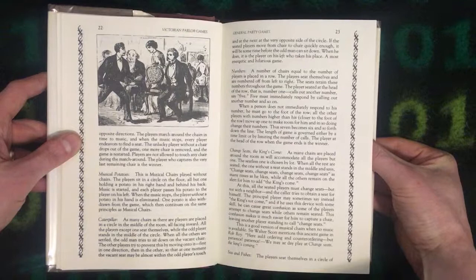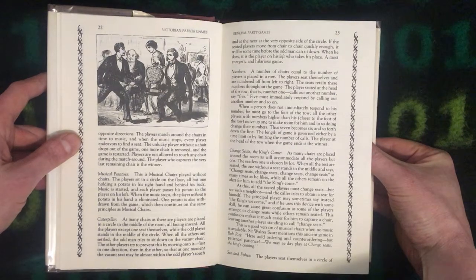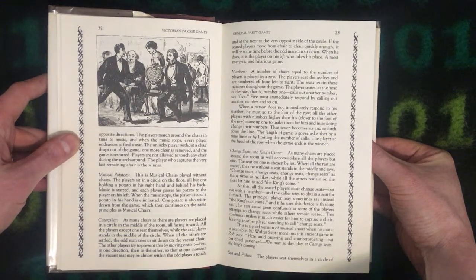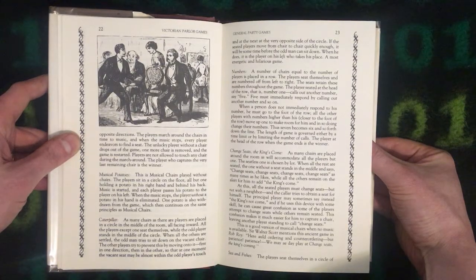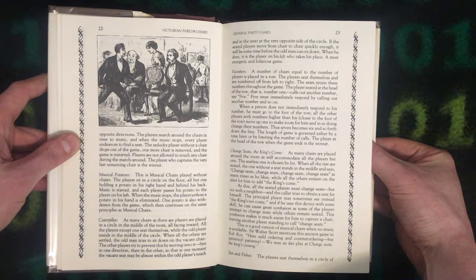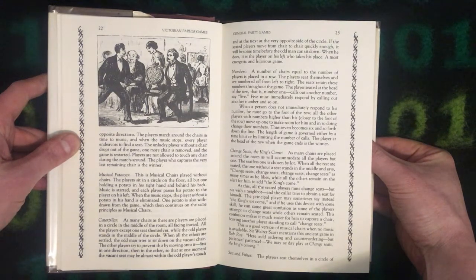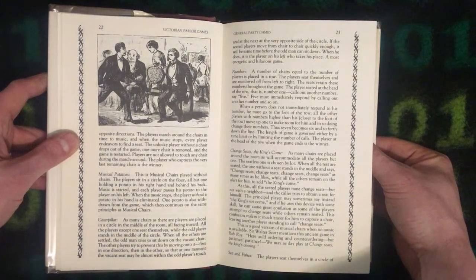This is Musical Chairs played without chairs. The players sit in a circle on the floor, all but one holding a potato in his right hand and behind his back. Music is started and each player passes his potato to the player on his left. When the music stops, the player without a potato in his hand is eliminated. One potato is also withdrawn from the game, which then continues on the same principles as Musical Chairs.